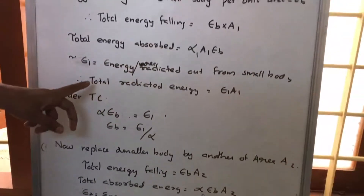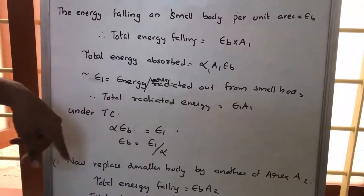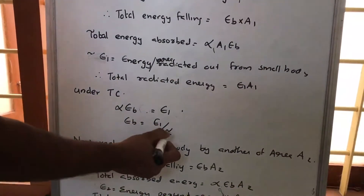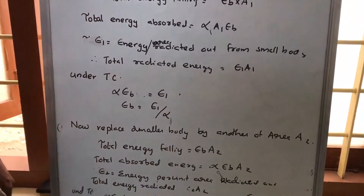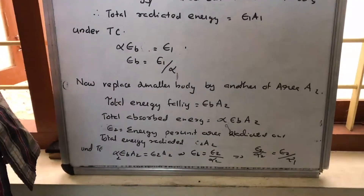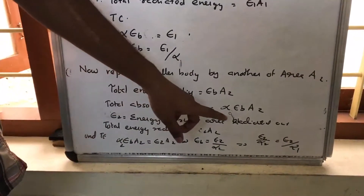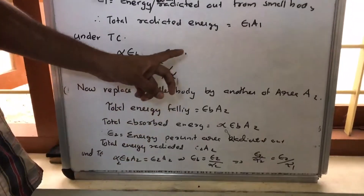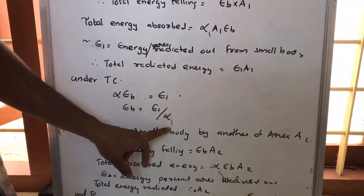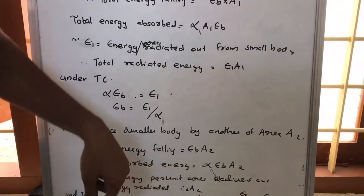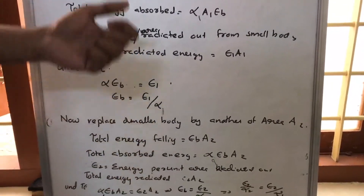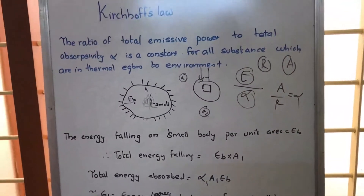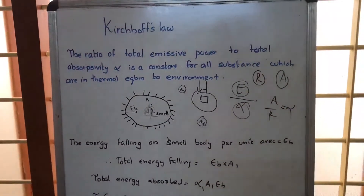We have already obtained that Eb equals E1 by alpha1, and now we have obtained Eb equals E2 by alpha2. That means E1 by alpha1 is equal to E2 by alpha2 — that is what Kirchhoff says. E1 by alpha is a constant.